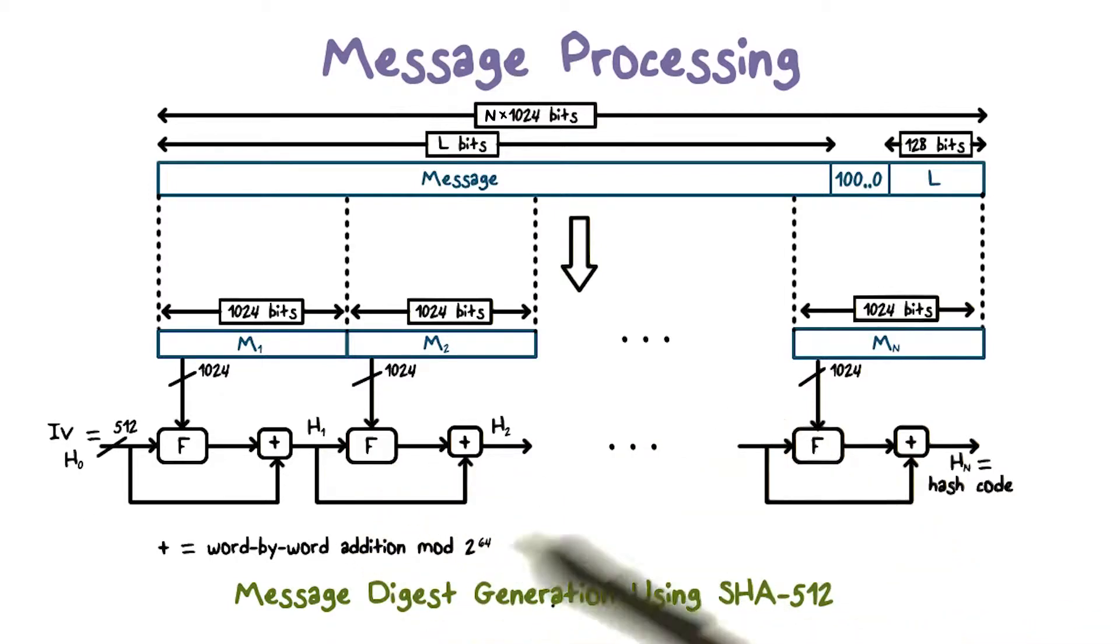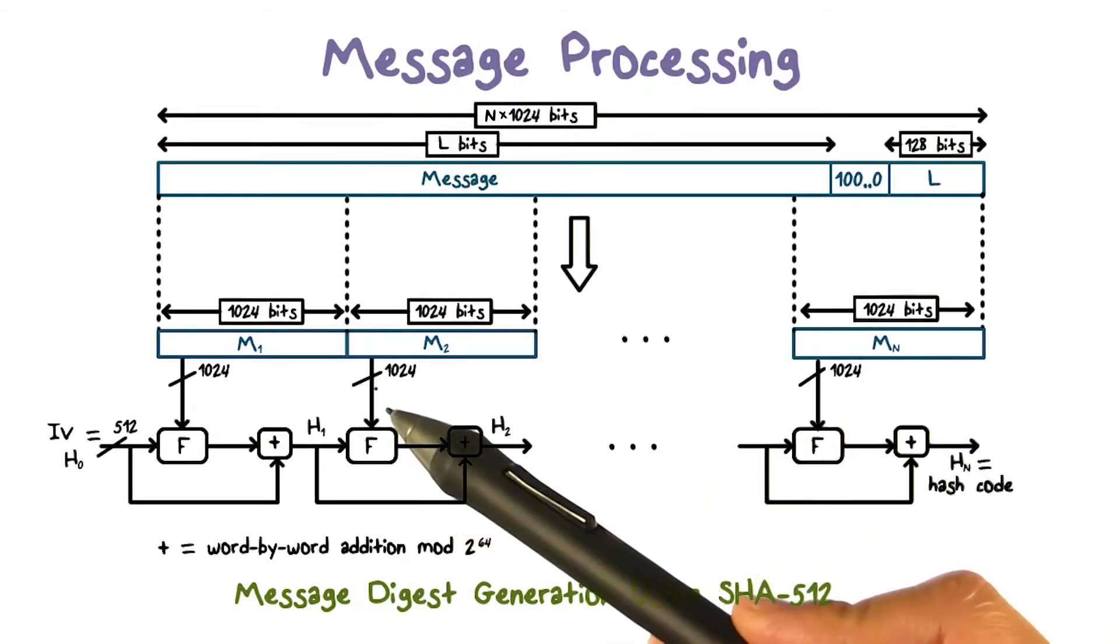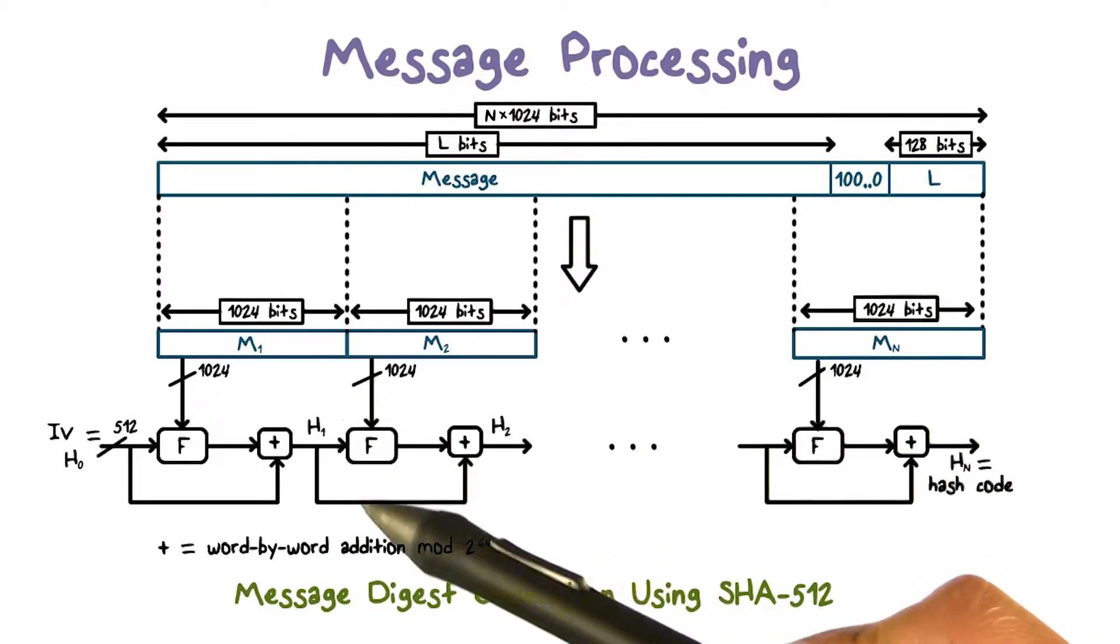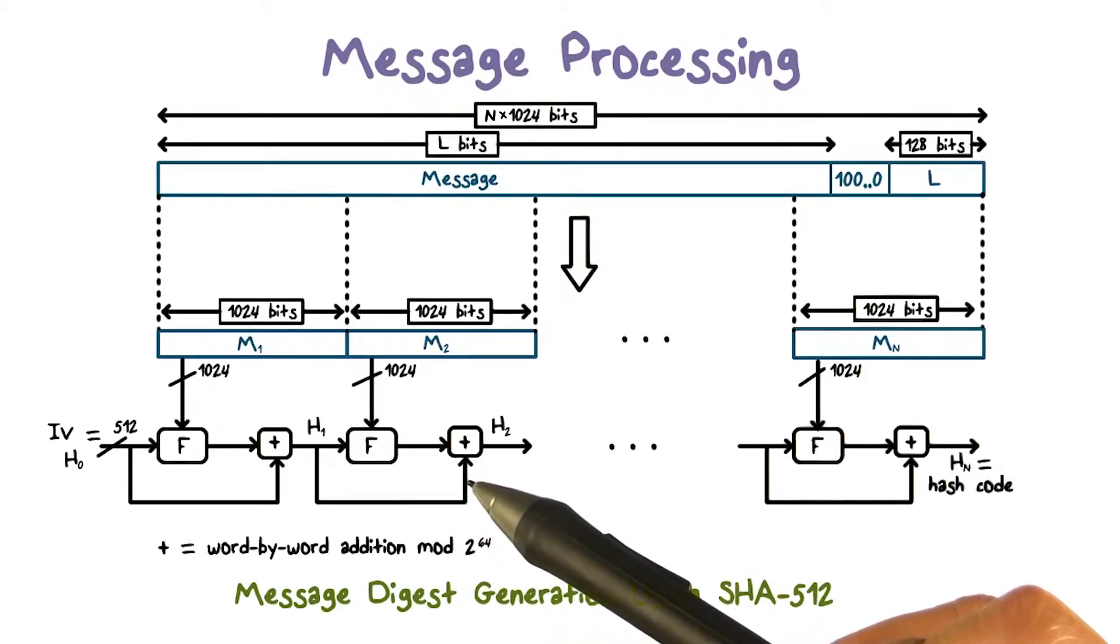After padding, then the message is processed one block at a time. Again, each block has 1024 bits. The logic of per block processing is described in the next slide. The result of processing the current block is the input to the processing of the next block.